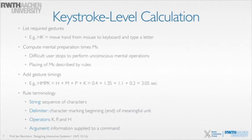To do keystroke level modeling of an interaction, you first think about what people type, click, or point to, and list the required gestures. For example, H followed by K would mean move the hand from mouse to keyboard and type a letter. Then you compute the mental preparation times that need to be inserted, placing M's based on the rules that the keystroke level model provides.